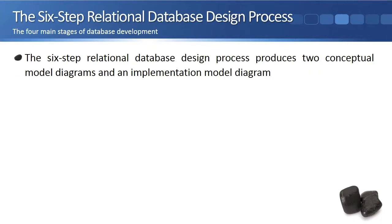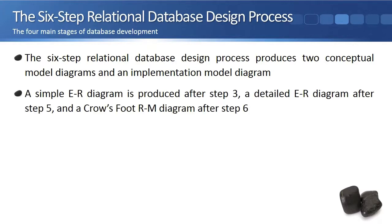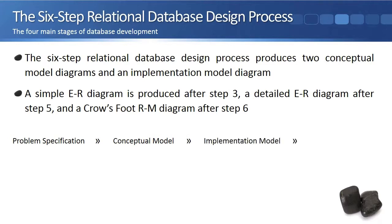The six-step relational database design process produces two conceptual model diagrams and an implementation model diagram. A simple ER diagram is produced after step three, a detailed ER diagram after step five, and a crow's foot RM diagram after step six. Thus, six-step relational database design is fully compatible with the four stages of database design and development.